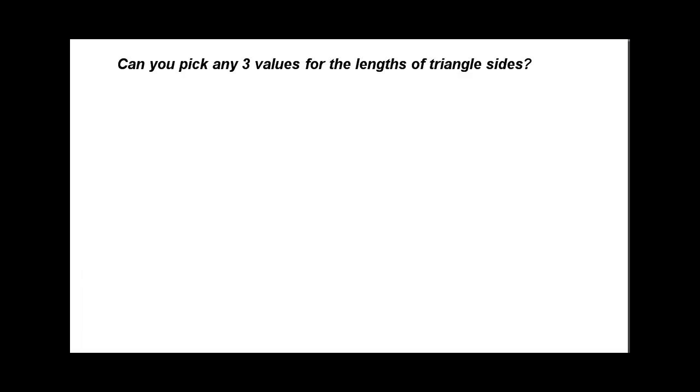The first question I want to ask is: can you pick any three values for the lengths of triangle sides? In other words, if you just make up three numbers at random, can we definitely make a triangle out of them? Like 2, 3, 4 — I just made up three random numbers. Or 1, 10, 2. Can we always make triangles from any three numbers we create?